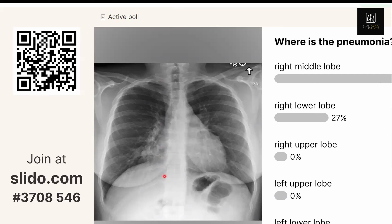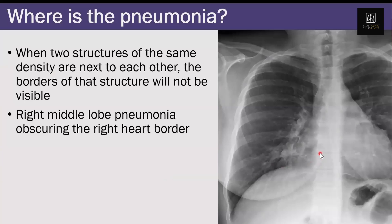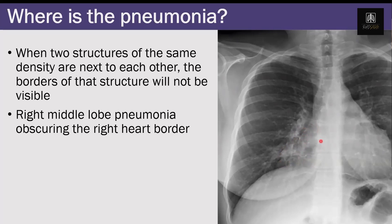Most people said that's in the right middle lobe, which is correct. We can say confidently it's in the right middle lobe because the middle lobe abuts the right heart border, and here we don't see the right heart border anymore. That's because there's something of water density — the pneumonia — next to the water density of the heart. It's like two water balloons stuck together; an X-ray would show one big blob. This is a right middle lobe pneumonia.